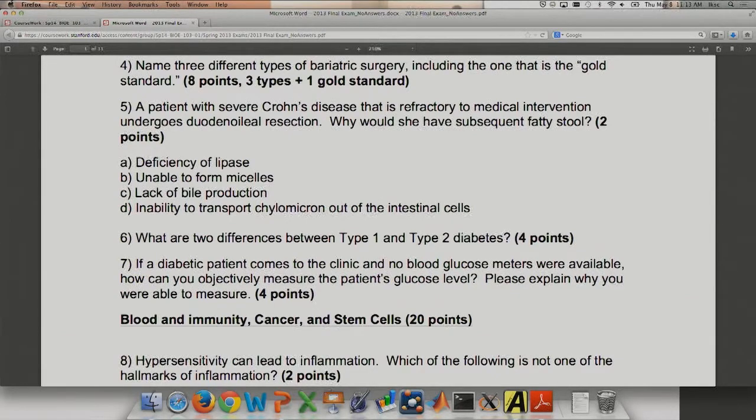Name the three different types of bariatric surgery and include one that is the gold standard. There's actually four covered in lecture. Gastric band, gastric bypass, duodenal switch, and Roux-en-Y. Which one of these is the gold standard? Roux-en-Y. So it's going to be very straightforward questions like this where the answers are direct and not confusing.